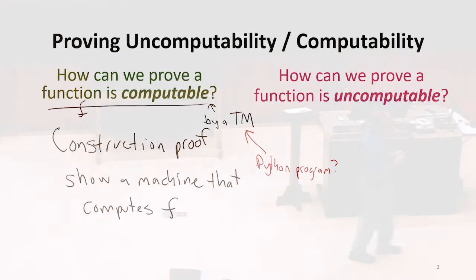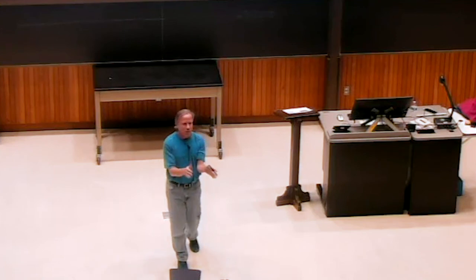So how do we know that? How do we know that anything we can construct in a Python program, we could also write in the Turing machine? To show that something is computable by a Turing machine, if we're going to do it by writing something else, we've got to show that whatever we did that something else in, we can simulate with the Turing machine.